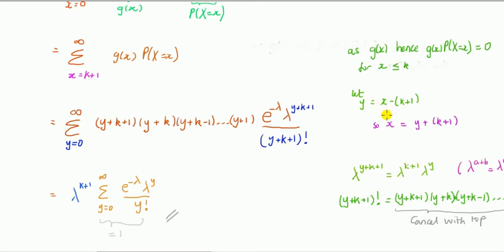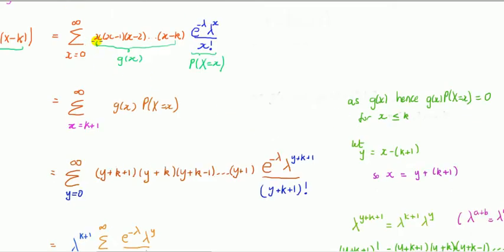Take that expression and rearrange it for x, then substitute into g(x). When x is y+k+1, then x minus 1 is y+k, and the final term x minus k becomes y+1. I suggest you just try it on a piece of paper as we go along. So everything is now in terms of y — some transformation of x.